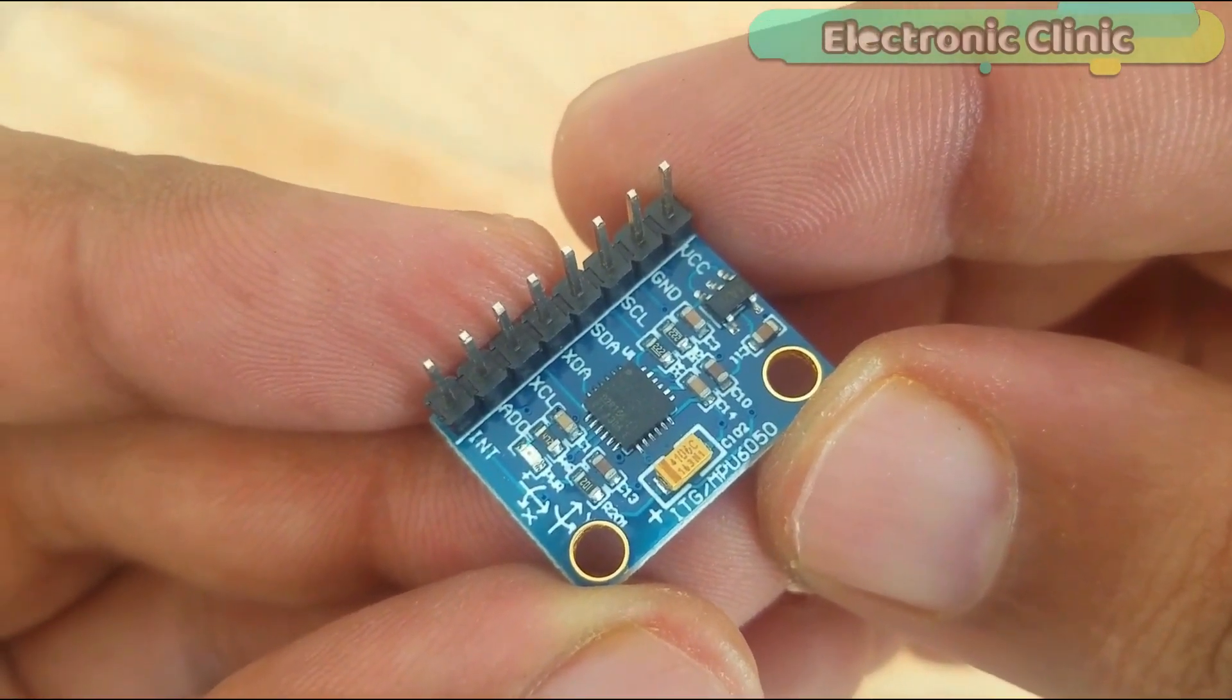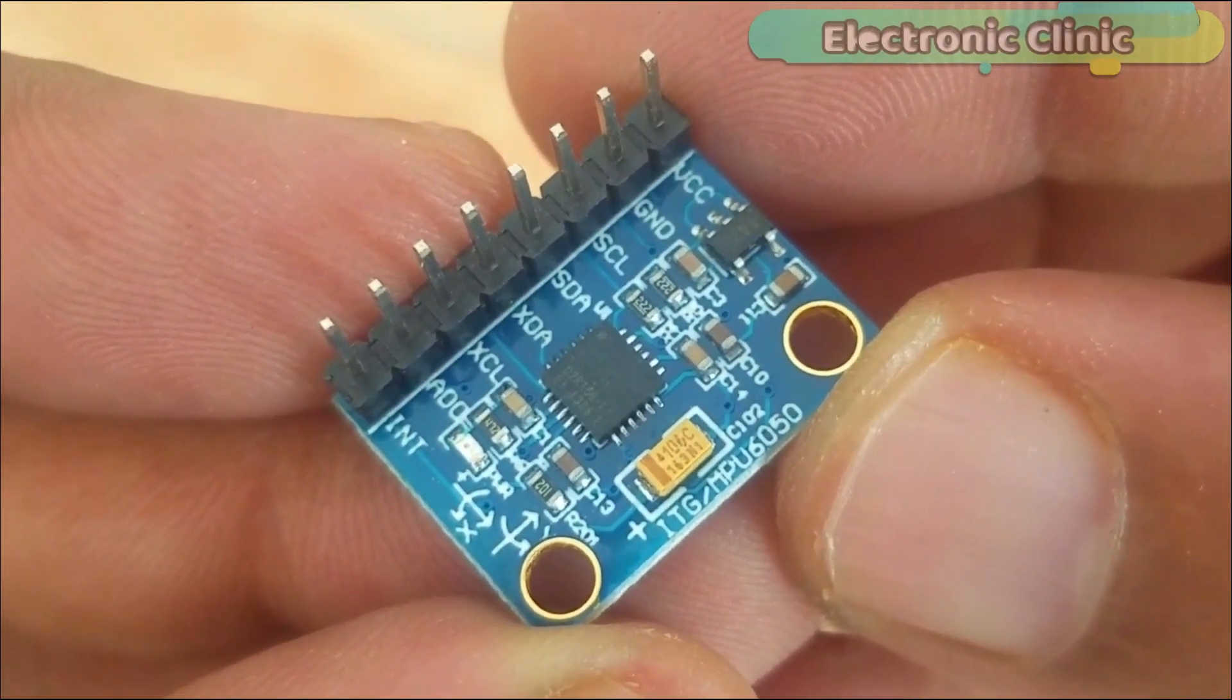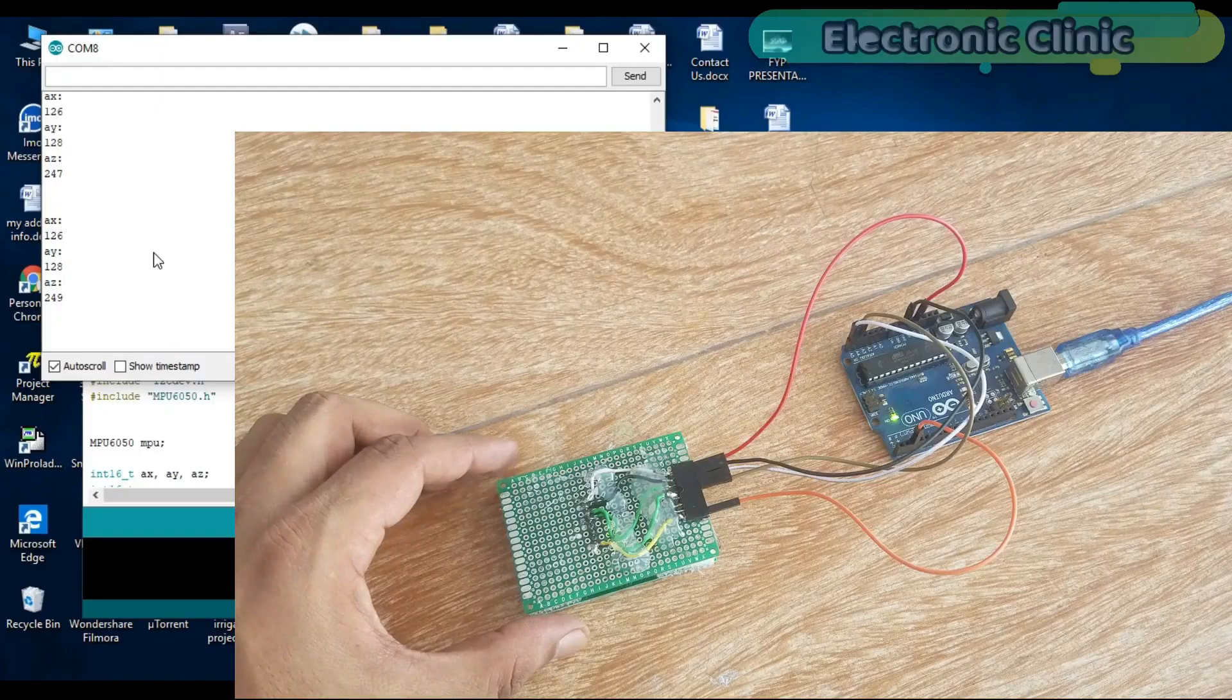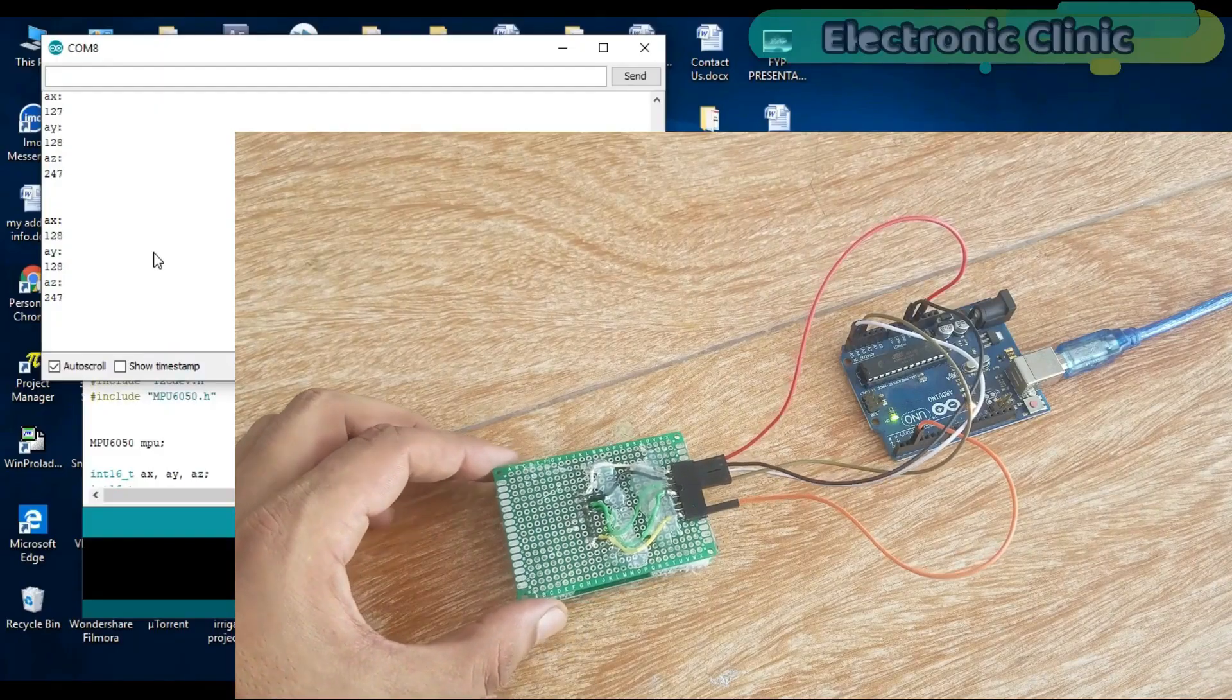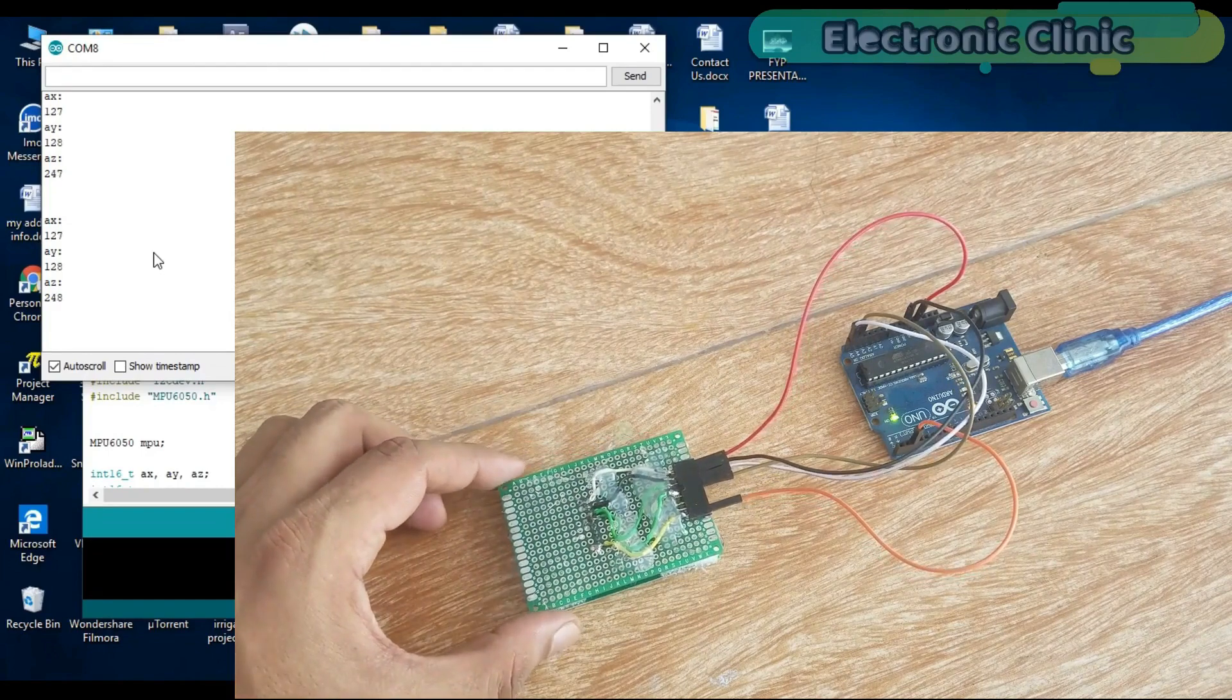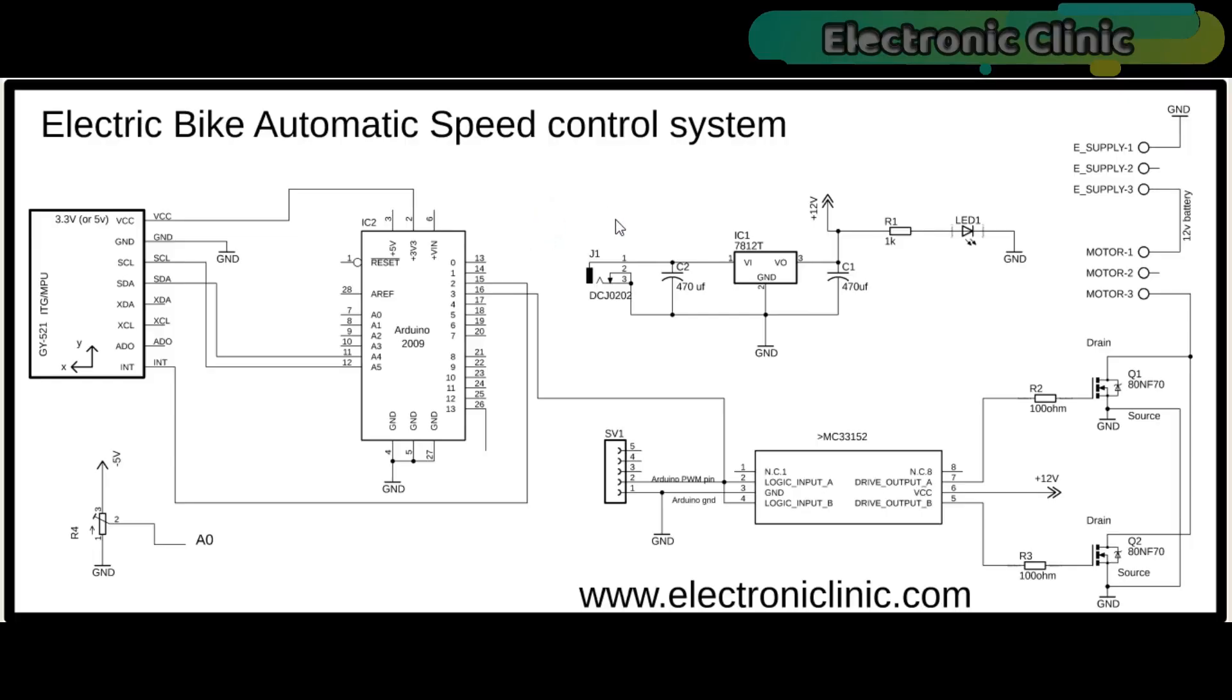As you can see clearly, this module has a total of 8 pins which are clearly labeled. Out of these 8 pins, I'll be using only the VCC, ground, SCL, SDA, and INT. The MPU6050 module interfacing with Arduino and basic program is already explained. You can find the link in the description.